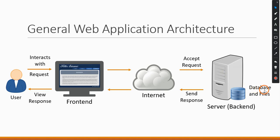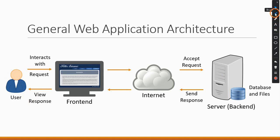The server takes the request for www.facebook.com and searches for the index page. This server contains a file system with files and also a database where some data is stored. The Facebook server finds the index page and sends it back as a response, which goes through the internet and reaches your system — ultimately seen by you. This brings us to two new terms: front end and back end. Front end is whatever the user interacts with — the web page they see on their monitor, including a header, menu, banner, text, and images.